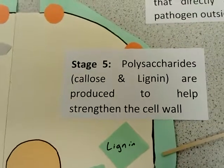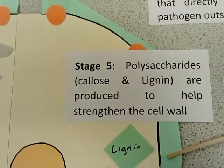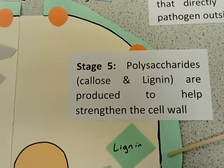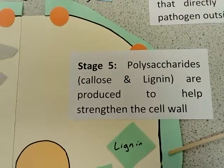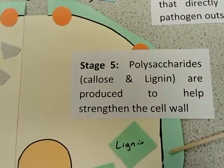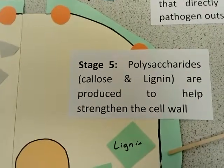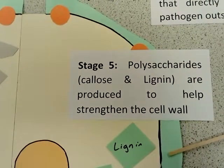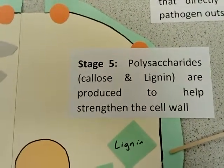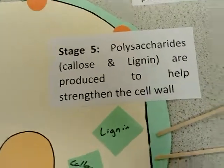This causes an increase in the transcription and messenger RNA for the gene that codes for callose and lignin. Callose and lignin are two chemicals that are used to strengthen the cell wall.